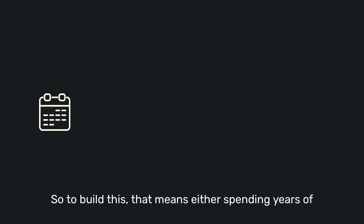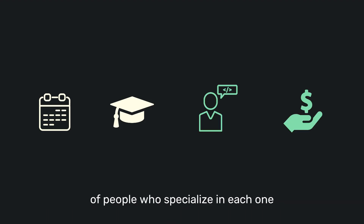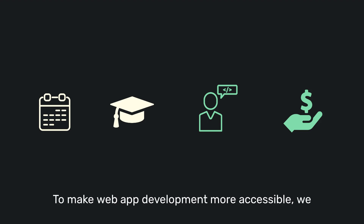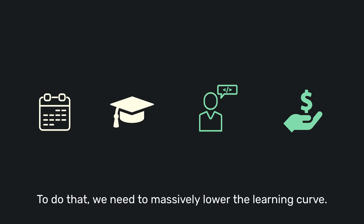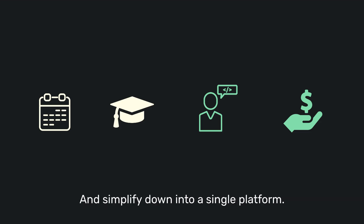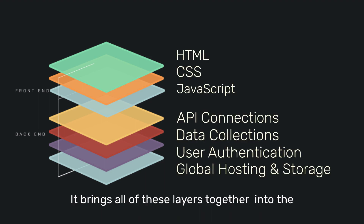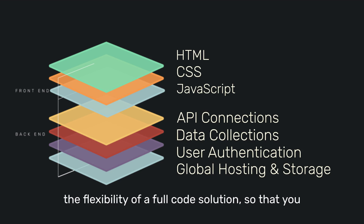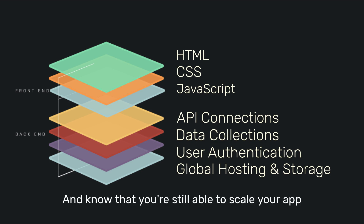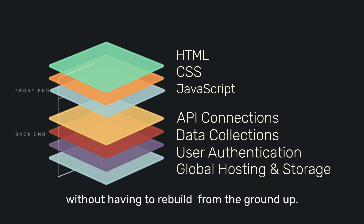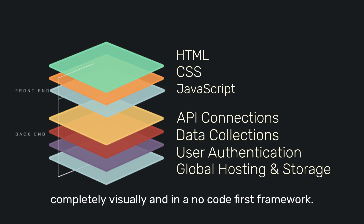To build all of this means either spending years learning basically five or more new foreign languages, or finding and hiring teams of people who specialize in each one. To make web app development more accessible, we need to make it simpler, faster, and cheaper — massively lowering the learning curve and simplifying down into a single platform. That's where the Builder stack comes in. Builder brings all of these layers together into the same no-code interface without sacrificing the flexibility of a full code solution, so you can build your apps fast, iterate quickly, and scale without having to rebuild from the ground up.